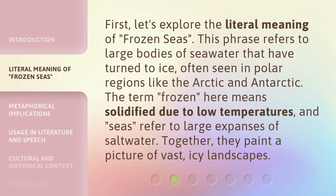First, let's explore the literal meaning of frozen seas. This phrase refers to large bodies of seawater that have turned to ice, often seen in polar regions like the Arctic and Antarctic. The term 'frozen' here means solidified due to low temperatures, and 'seas' refers to large expanses of saltwater. Together, they paint a picture of vast icy landscapes.